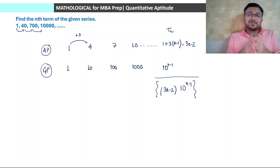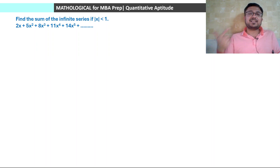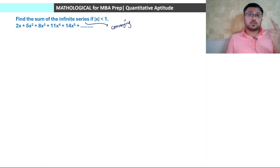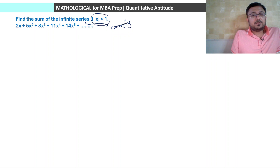Now, how to find the sum. For a simple example, the sum of an infinite series converges only if it is a GP with common ratio less than 1. Given that |x| < 1, consider the series: 2x + 5x² + 8x³ + 11x⁴ + 14x⁵ and so on. In this case we do not need to find the nth term directly. The approach is to convert this series into a GP form from which we can find the sum.